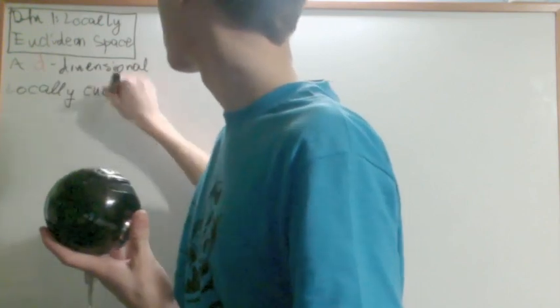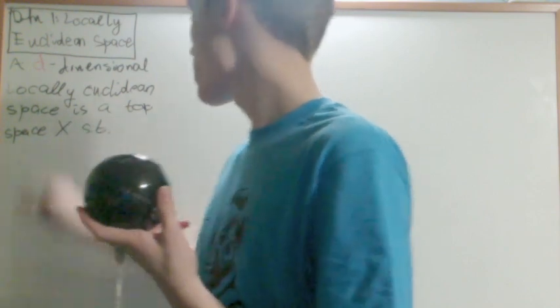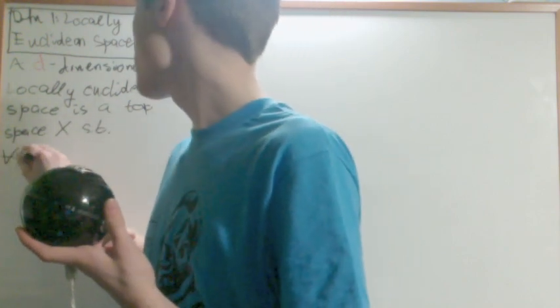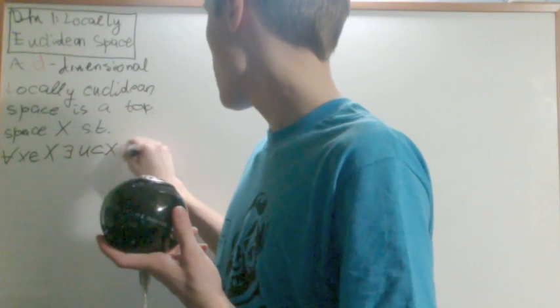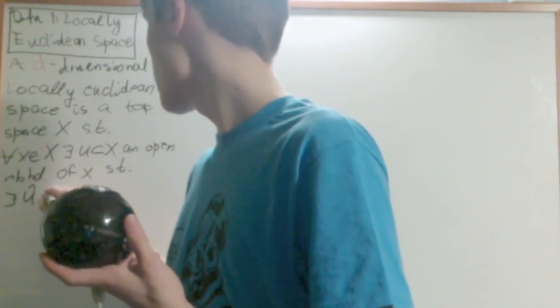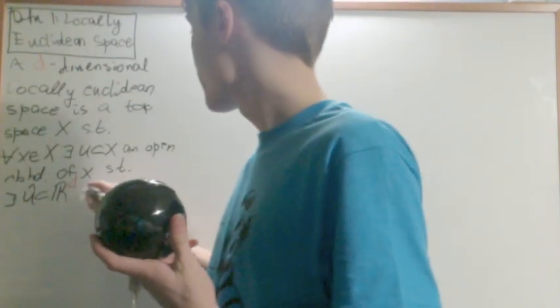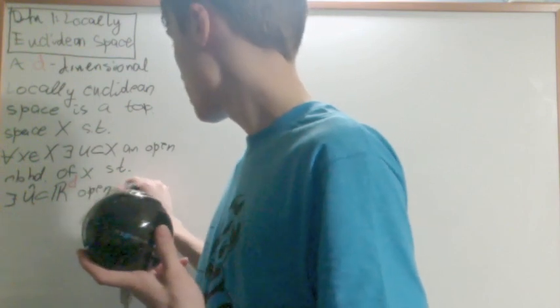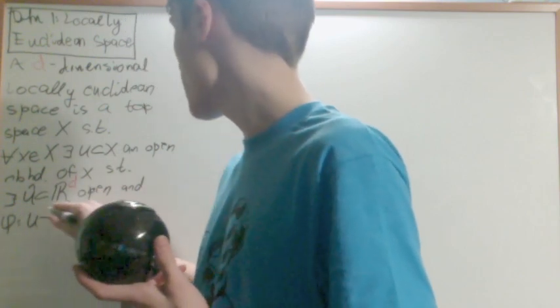What we say is that a d-dimensional locally Euclidean space is a topological space X, such that for any x I choose from X, there exists U a subset of X, an open neighborhood of x, such that there exists U hat, an open subset of Rd, same d as before, and phi from U into U hat, a homeomorphism.